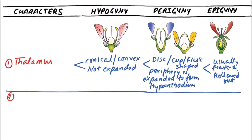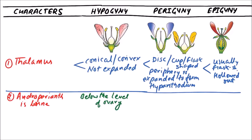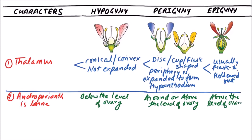The next difference is of androperianth. The androperianth is borne below the level of the ovary in hypogyny, around or above the level of the ovary in perigyny, and above the level of the ovary in epigyny.